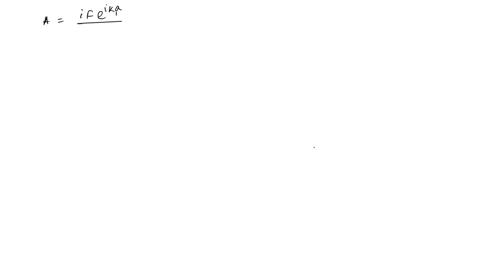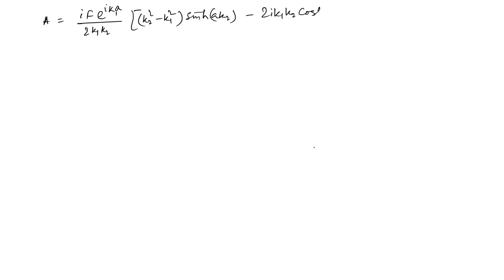So the final relation is: A = (iF·e^(ik₁a))/(2k₁k₂) · [(k₂² − k₁²)·sinh(k₂a) − 2ik₁k₂·cosh(k₂a)]. Now our job is to find T = |F|²/|A|², so we compute |A|²/|F|² and then invert it.